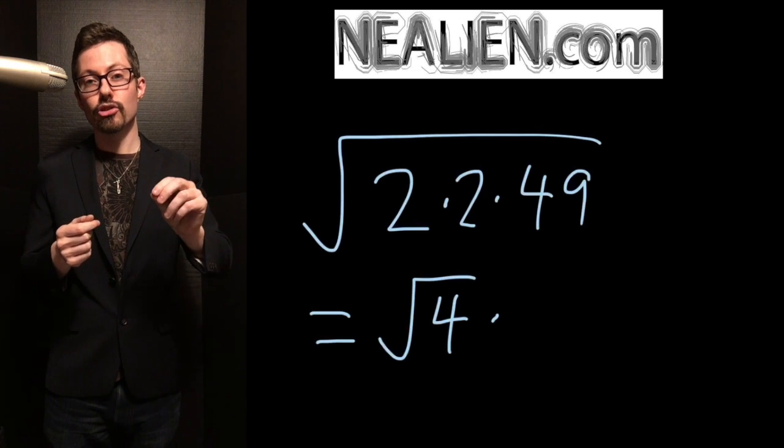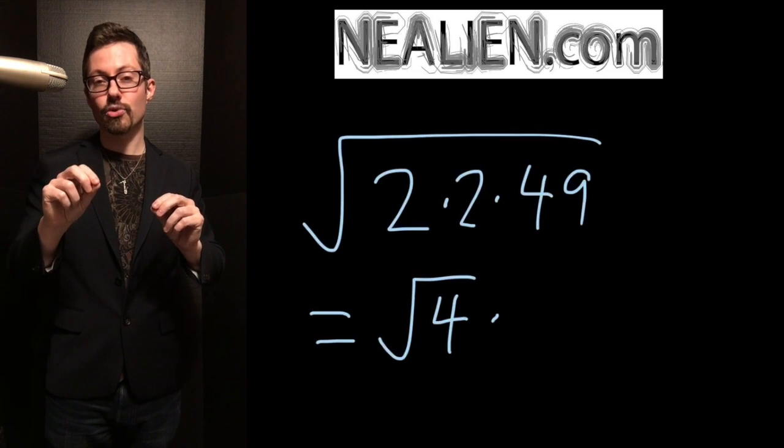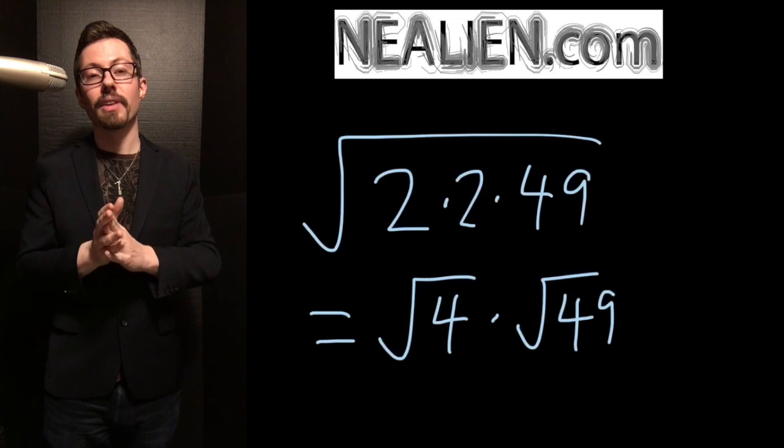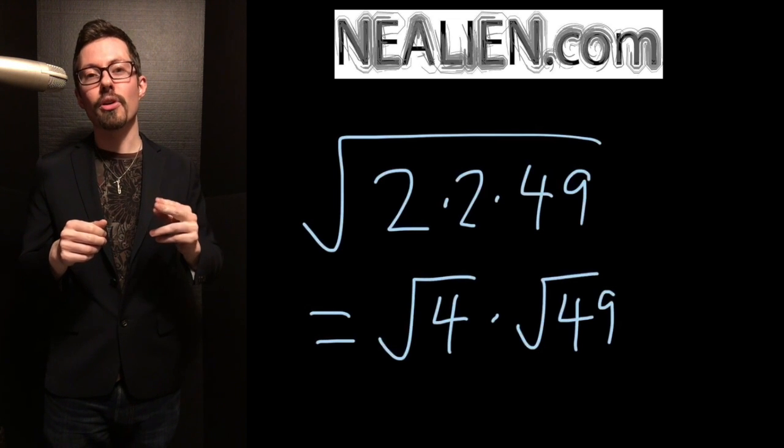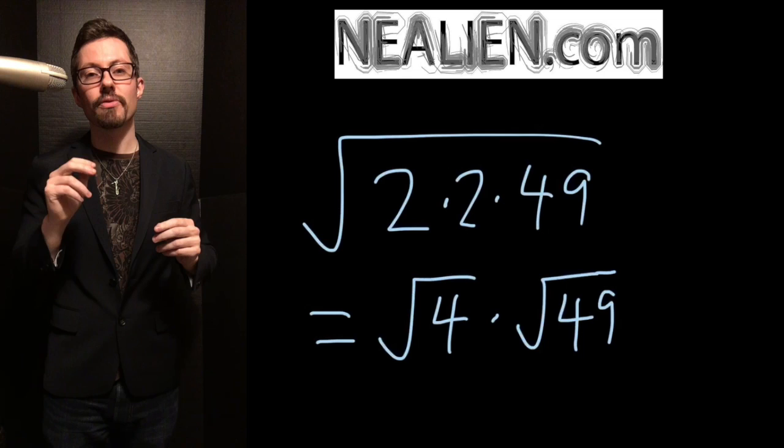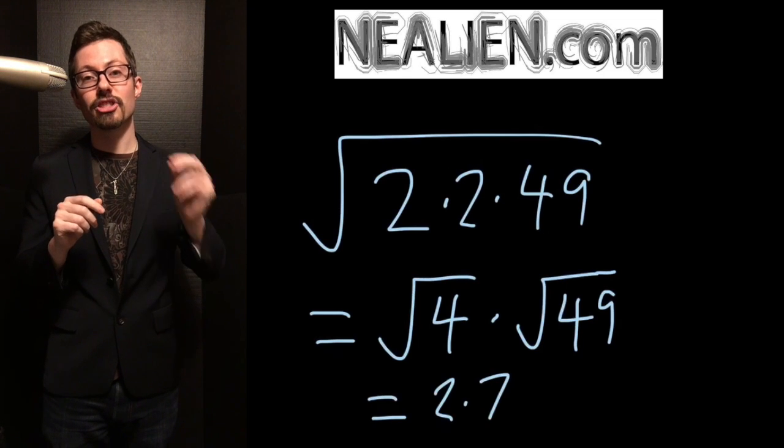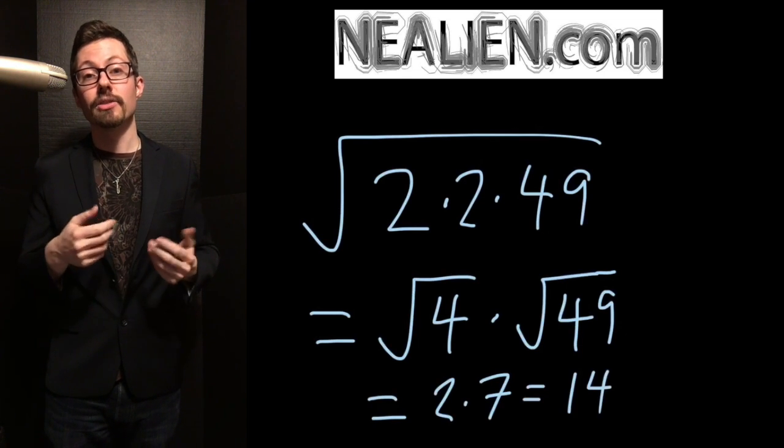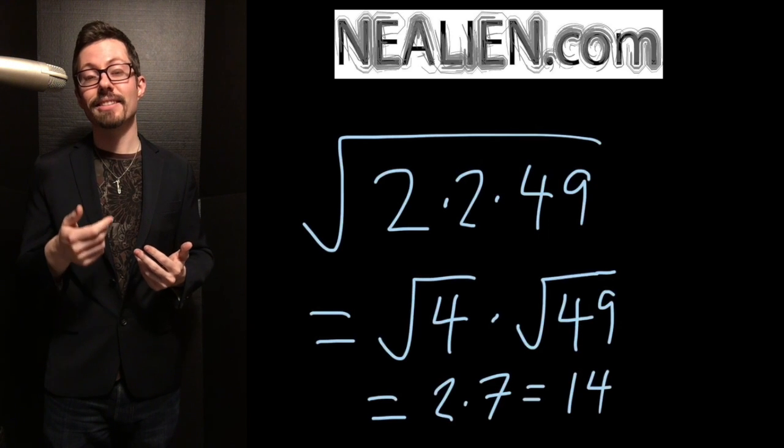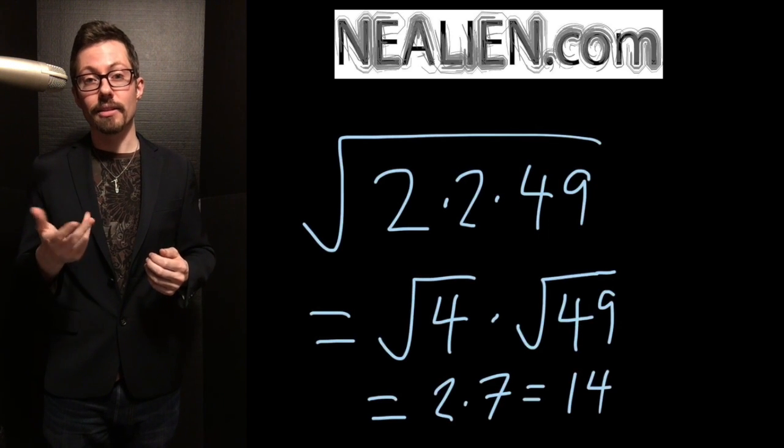Basically, you've got 2 squared times 7 squared within the radical. The square root of 49 is 7. So it's 2 times 7, which is 14. It turns out that the square root of 196 equals exactly 14.